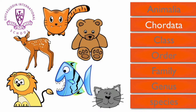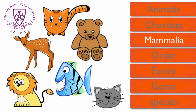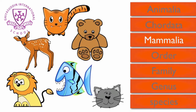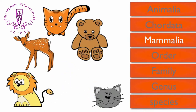Class is the next level of classification. The class that the lion belongs to is called Mammalia. Scientists use Greek words because they are understood everywhere. Mammalia means mammals. Most of them have hair or fur, so we can remove the fish from this group because they are not mammals.